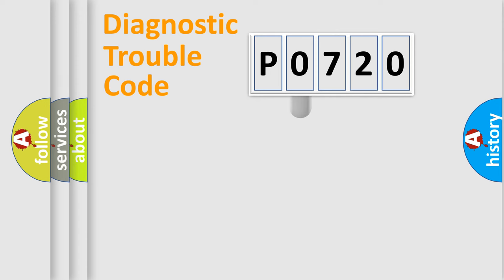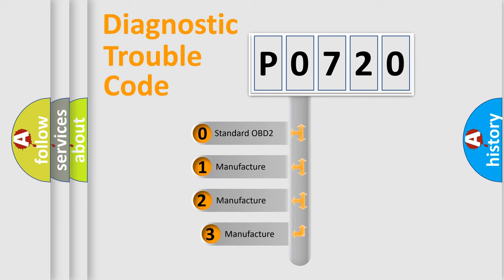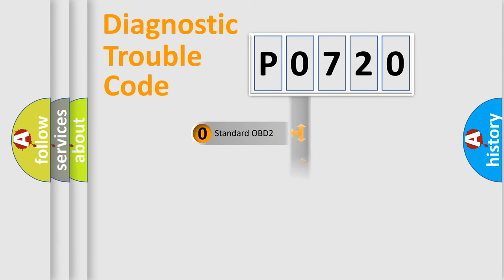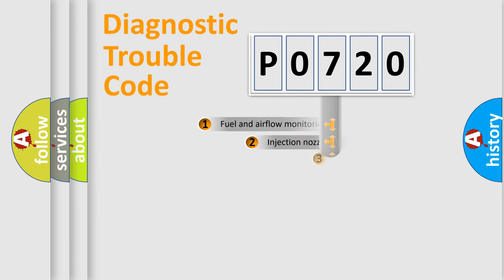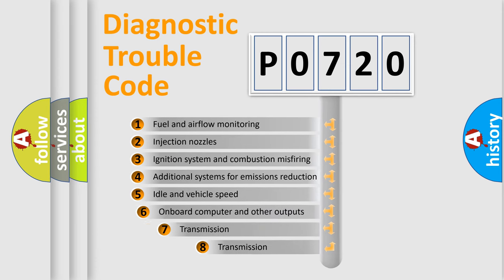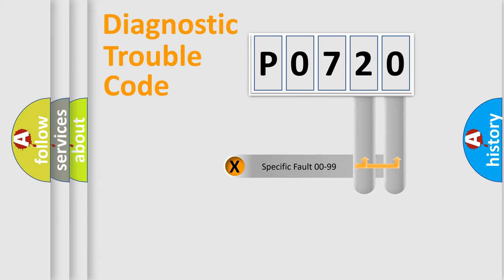This distribution is defined in the first character of the code. If the second character is expressed as zero, it is a standardized error. In the case of numbers 1, 2, or 3, it is a more manufacturer-specific expression of a car-specific error. The third character specifies a subset of errors. The distribution shown is valid only for the standardized DTC code.